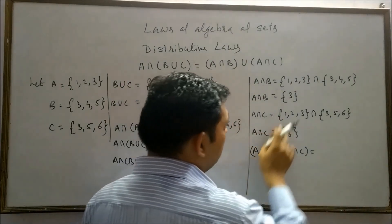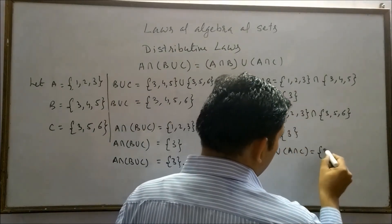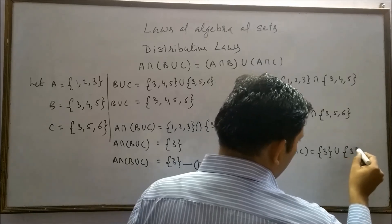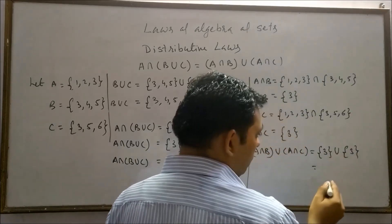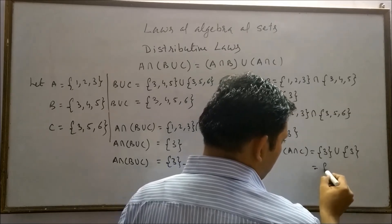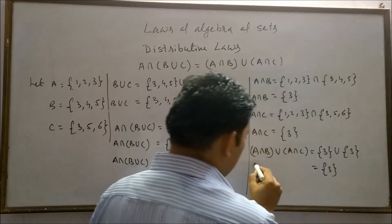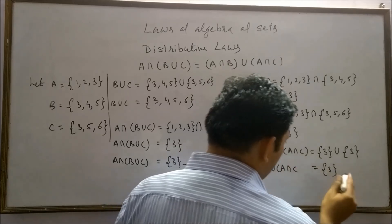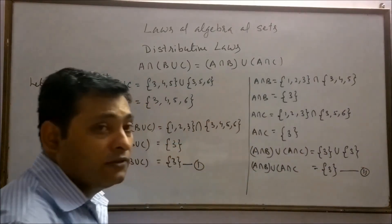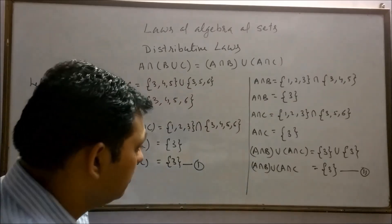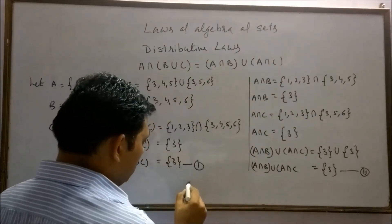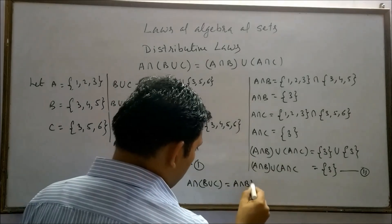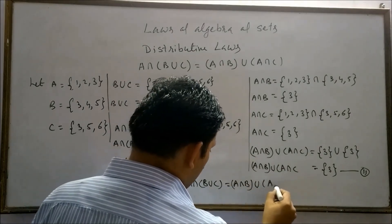Now take the union of A intersection B and A intersection C. A intersection B = {3} and A intersection C = {3}, so their union = {3}. This is our second result. The first and second results are the same, so we conclude A intersection (B union C) = (A intersection B) union (A intersection C).